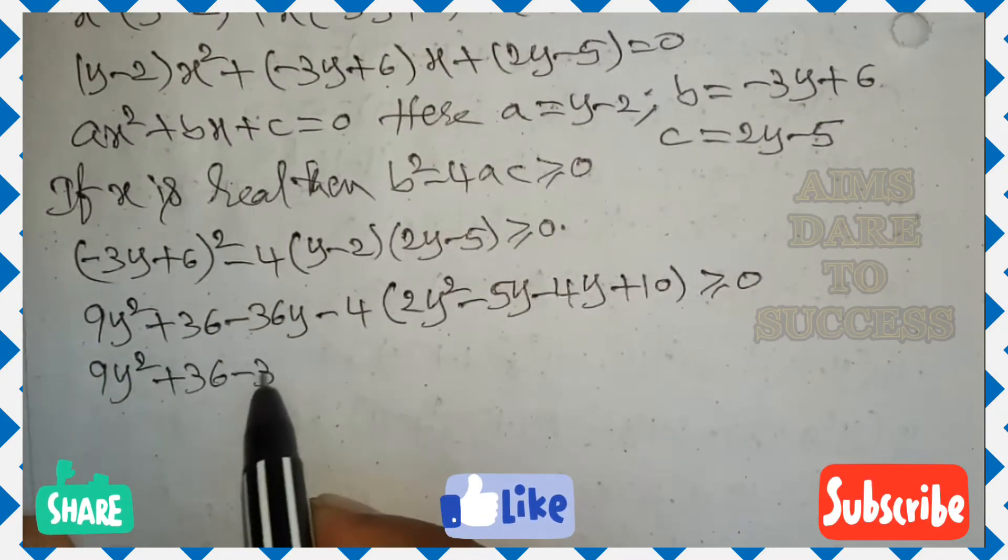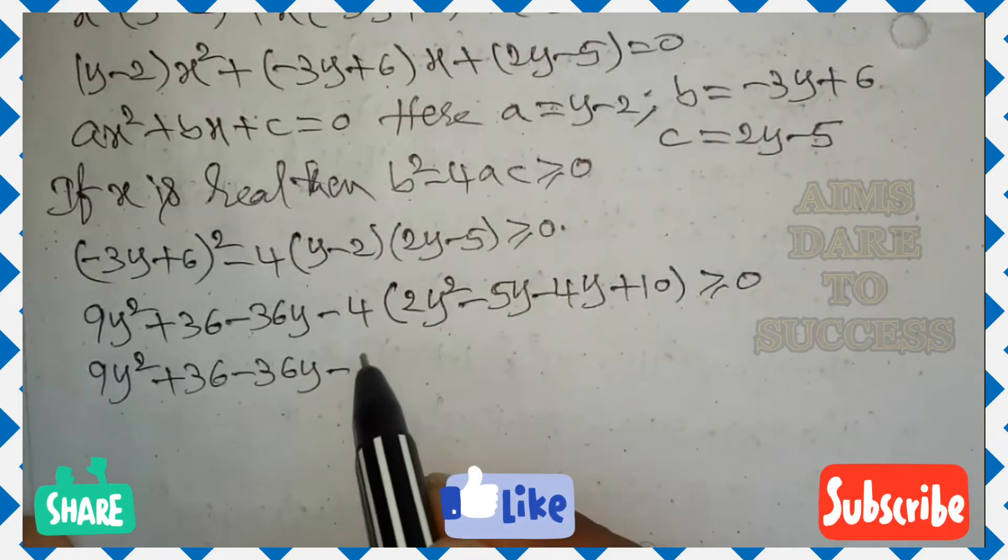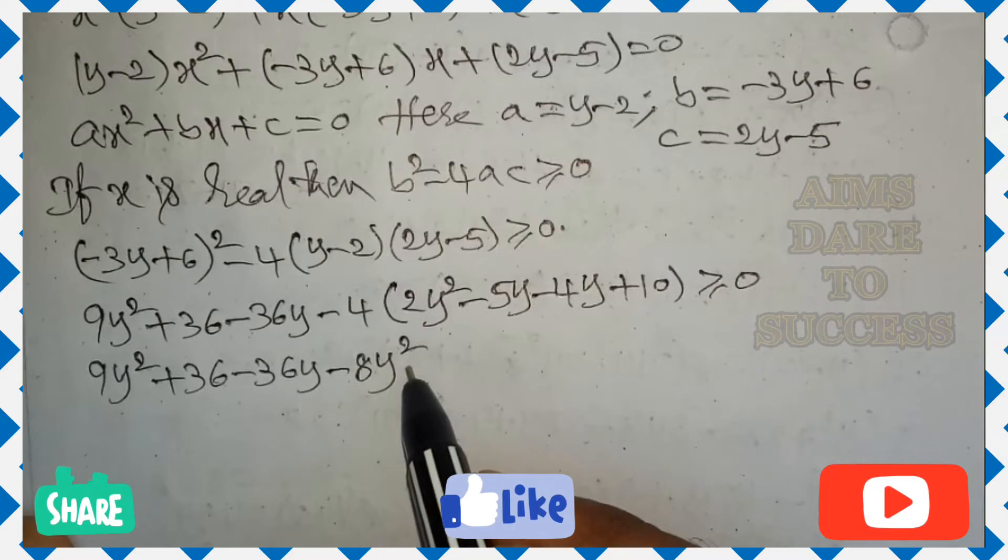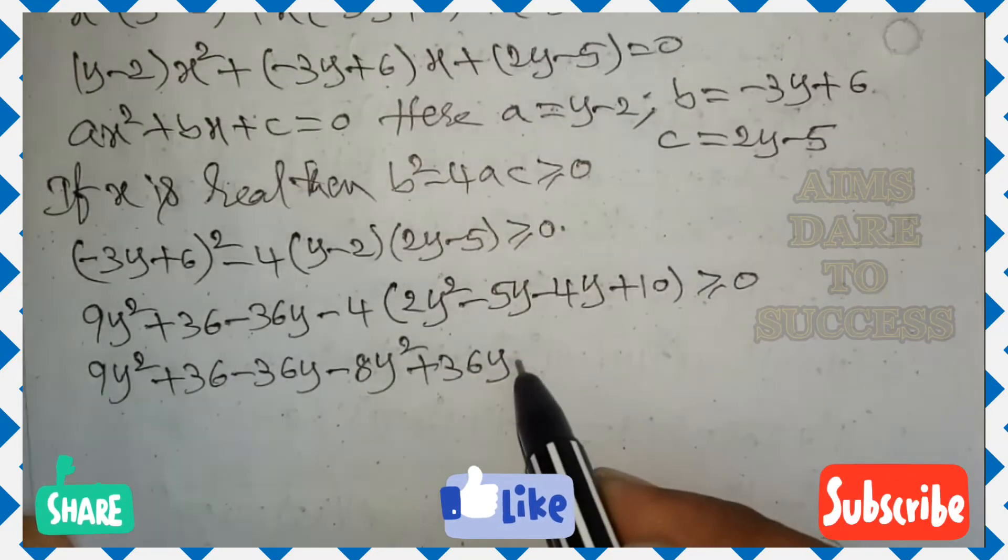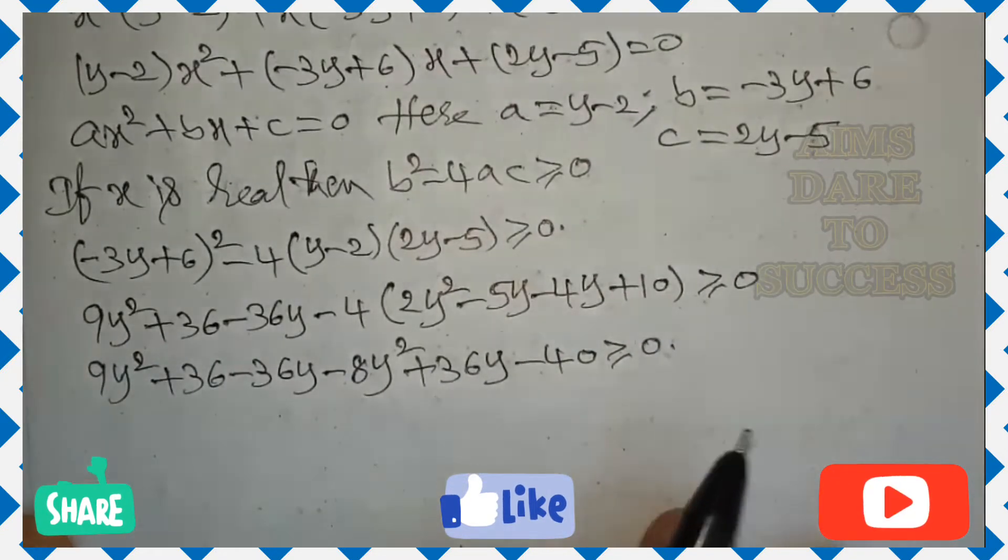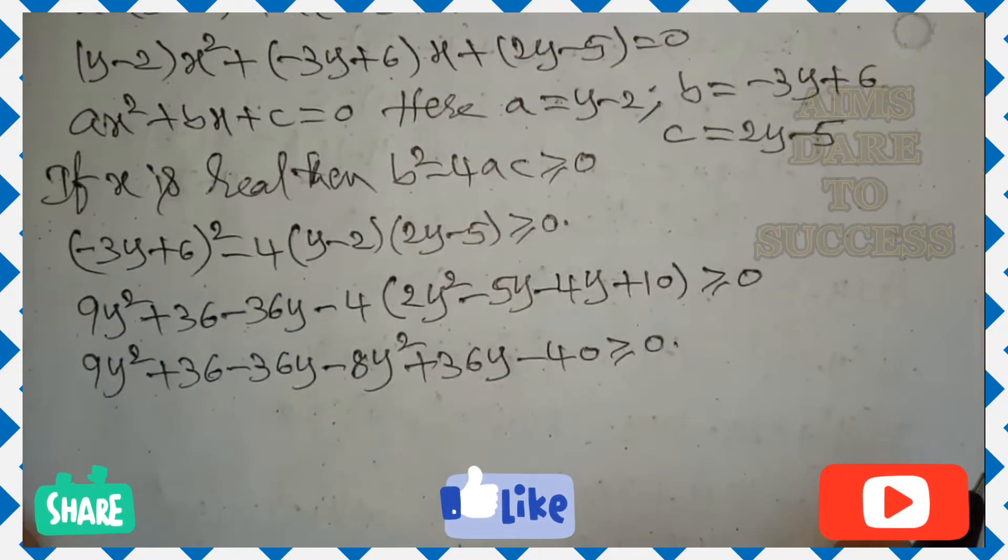9y square plus 36 minus 36y minus 4 multiply inside. we get 8y square minus 5y minus 4y is minus 9y minus into minus plus 36y, minus 4 into 10 minus 40 is greater than or equals to 0.